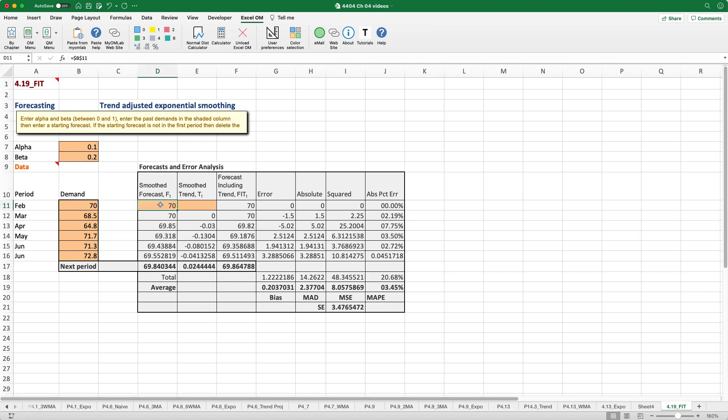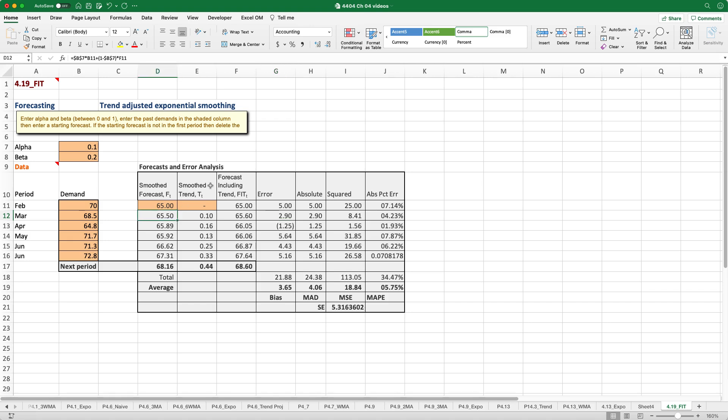We have an initial forecast, as given in the question, of 65, and our initial trend of 0. If we clean up our decimal places just a little bit here so everything looks easier to read, you can see that our forecasts are virtually identical to what we had done manually. Our mean absolute deviation of 4.06, and our mean squared error of 18.84, and a mean absolute percentage error of 5.75%.